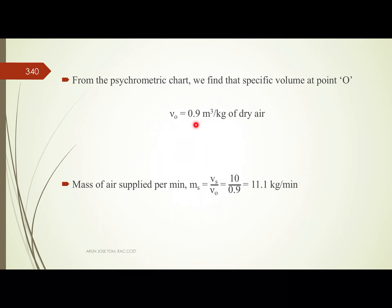The specific volume at point O is 0.9 cubic meters per kilogram of dry air. The mass flow rate of supply air is: discharge divided by specific volume, which is 10 m³/min divided by 0.9, giving 11.1 kg per minute.